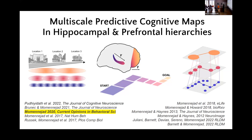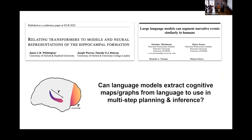A number of papers recently suggested that transformers might actually be models of neural representations of hippocampal formation. My former colleagues at Princeton also published a paper saying that large language models can segment narrative events similarly to humans — and narrative event segmentation is hippocampally and prefrontally dependent. So it was very clear to me that I needed to test whether large language models can actually extract cognitive maps and graphs from language for use in multi-step planning and inference.